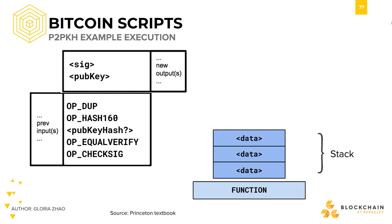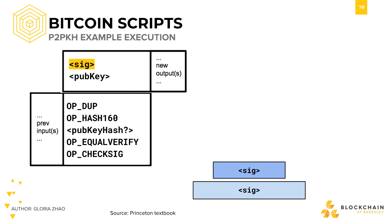Bitcoin script is stack-based, which is first in, last out. So execution will proceed as follows. We first put our signature on the stack. Then here comes our public key.